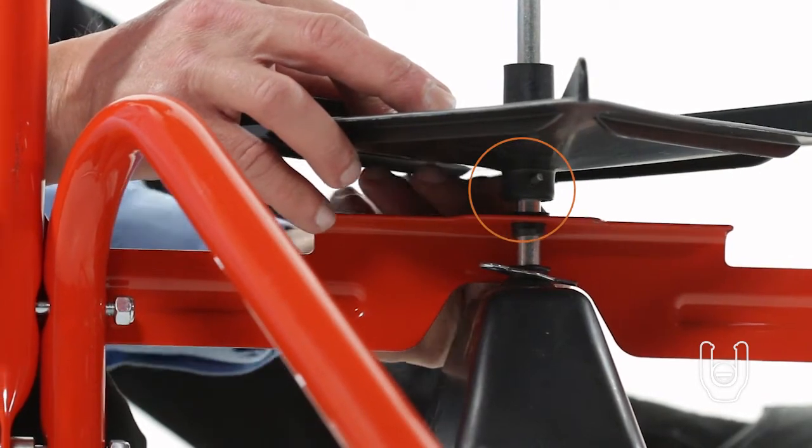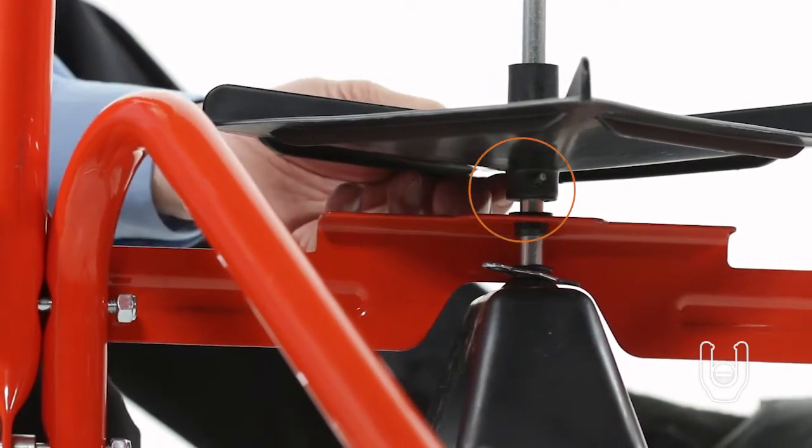Then, insert a 1/8 by 1-1/2-inch cotter pin, Part H, through the shaft and the impeller.